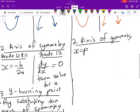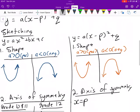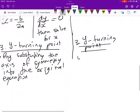And then this one here, you don't have to label that much. When you find the y turning point, we are just going to look at the value of q. We are going to say y is equals to q.